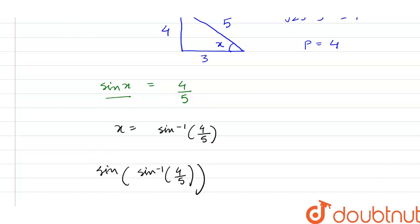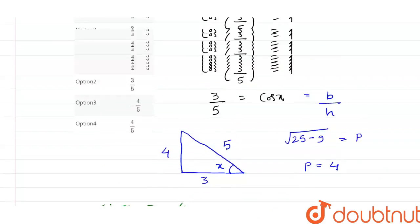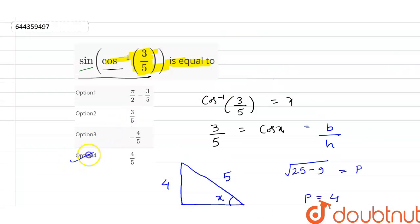Since sine and sine inverse cancel each other out, we remain with 4/5. Now if we check our options, we can see that option number 4 is correct.